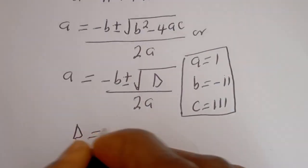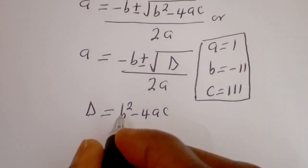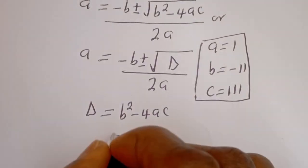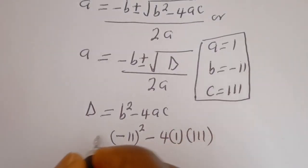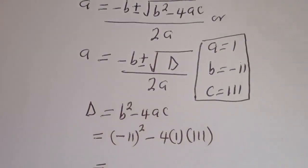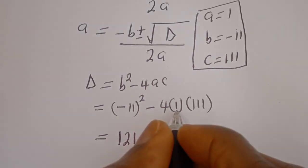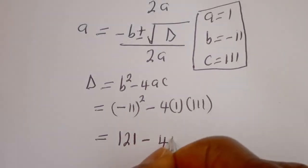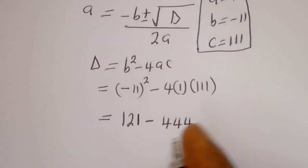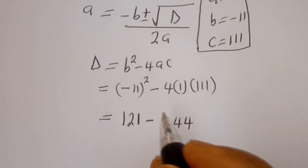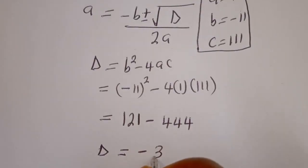The discriminant D equals B squared minus 4AC. That is: (minus 11) squared minus 4 times 1 times 111, which equals 121 minus 444, giving D equals minus 323.